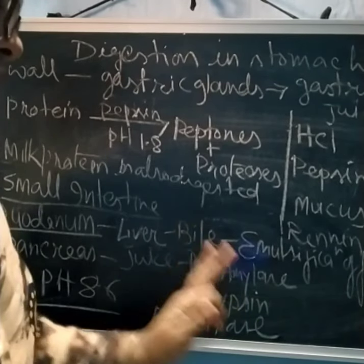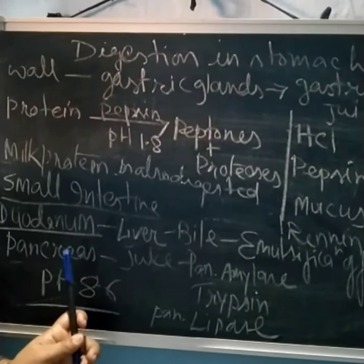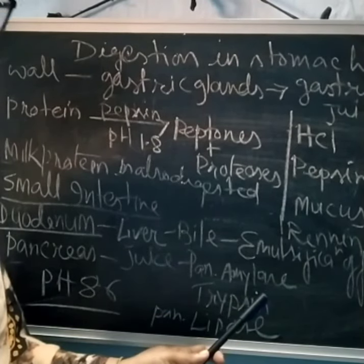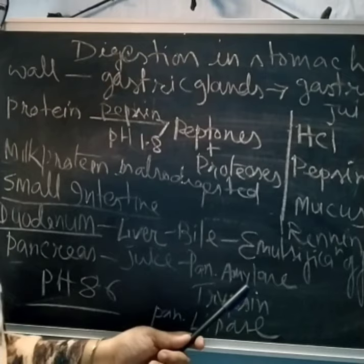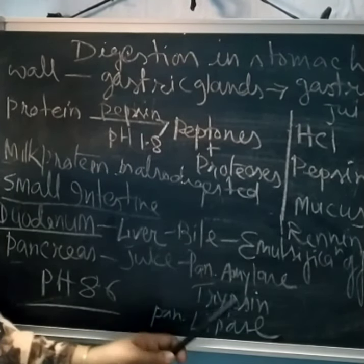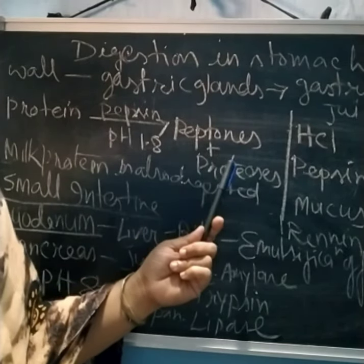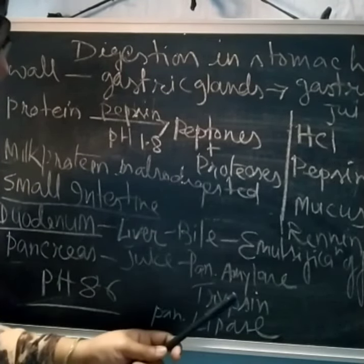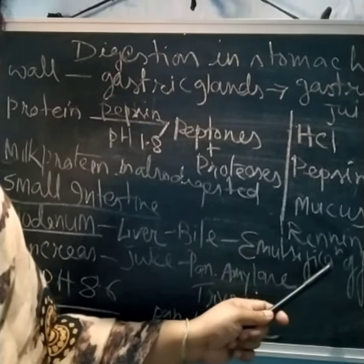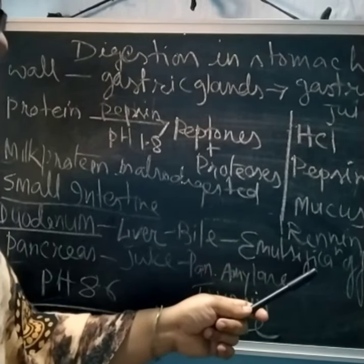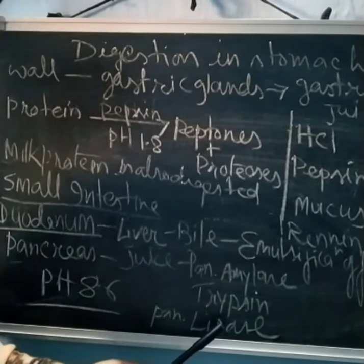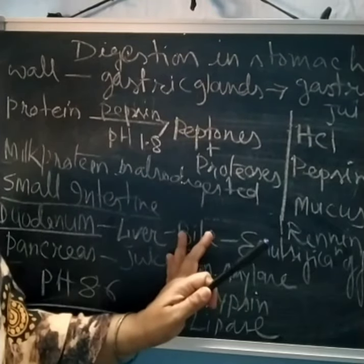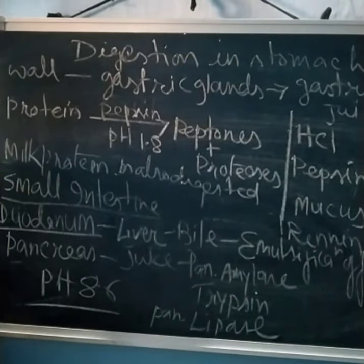Most digestion occurs in the duodenum part of the small intestine. Pancreatic amylase digests starch into maltose, just as salivary amylase does. Trypsin acts on peptones and proteoses and converts them into dipeptides. Lipase acts on the emulsified fat — already emulsified by the liver — and converts it into fatty acids and glycerol.